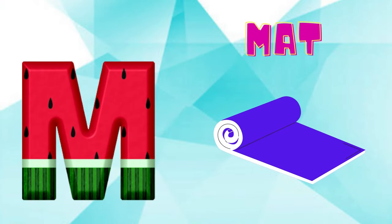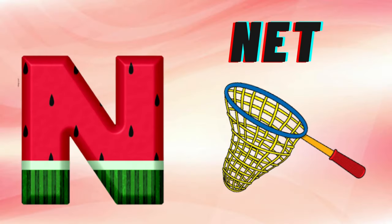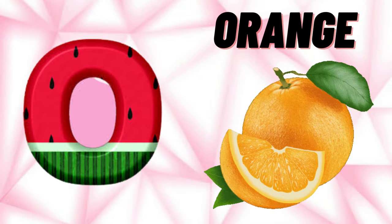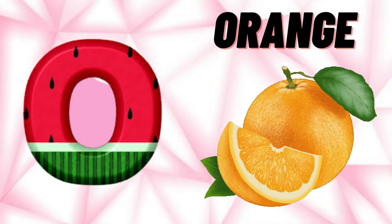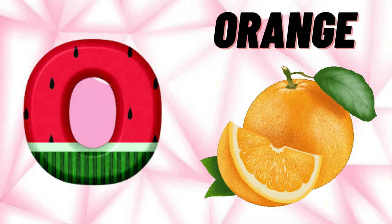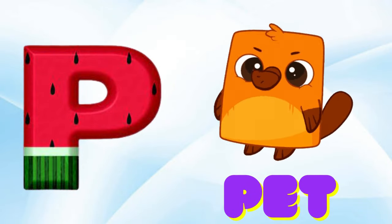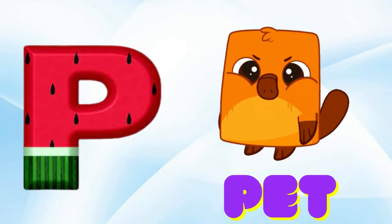M is for Mat, M-M-Mat. N is for Net, N-N-Net. O is for Orange, O-O-Orange. P is for Pet, P-P-Pet.